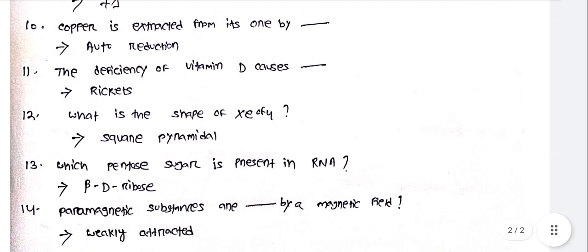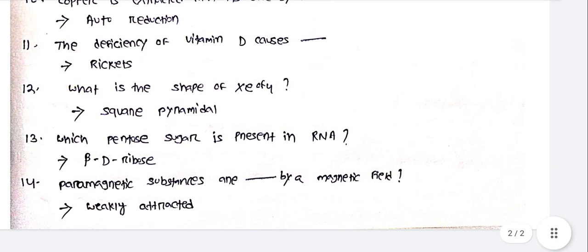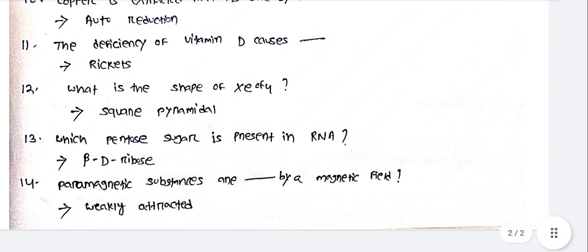What is the shape of XeOF₄? It is a square pyramid. Which pentose sugar is present in RNA? Beta-D-ribose. Paramagnetic substances are weakly attracted by a magnetic field.